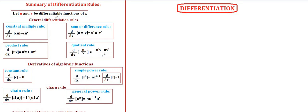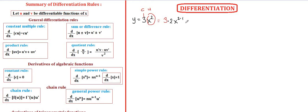Let u and v be differentiable functions of x. Some general differentiation rules. Constant multiple rule: the derivative of a constant times a function is the constant times the derivative of the function. For example, if y equals 3x squared, the 3 is our constant c and x squared is the function u. We pull the constant to the front and differentiate x squared only. By the power rule, 2 comes in front and we subtract 1 from the power, giving us 6x.